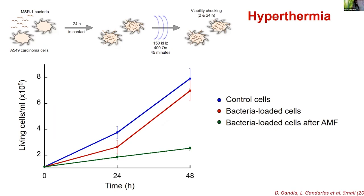Using propidium iodide again, we saw that two hours after magnetic field application and 24 hours after the hyperthermia treatment, the percentage of dead cells increased significantly — meaning hyperthermia with magnetic bacteria actually works, at least in vitro. We also saw a slower growth rate in bacteria-loaded cells after applying the magnetic field, especially 48 hours after treatment. Next we will have to try this in vivo.